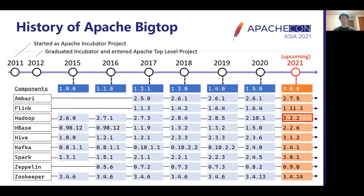Here is the history of Apache Big Top. Big Top was started in 2011 and has been grown by many contributors. New versions have been released steadily around once a year. We have added new software as Big Top components and upgraded their versions to more recent ones. The next version number of Big Top is 3.0, because the component stack is based on Hadoop 3 from this version. The first Hadoop 3 was released in 2017, but we couldn't catch up with it for a few years, so it's a great leap for us. With this change, we can leverage new features introduced in Hadoop 3, such as erasure coding, and keep up with forthcoming upgrades.